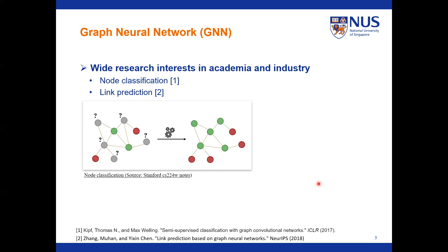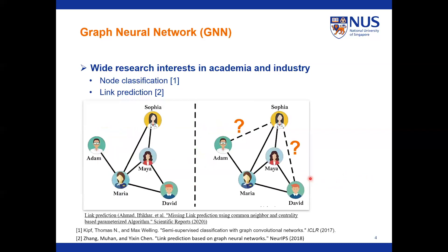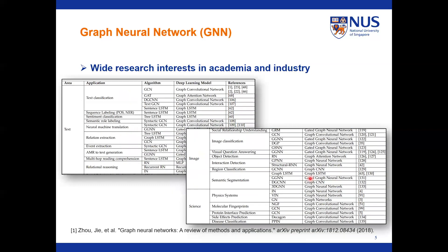GNNs generalize deep representation learning to graph data and have achieved state-of-the-art performance across a number of graph-based tasks, such as node classification, link prediction, graph classification, and recommendation systems. For example, a node classification task takes place in a semi-supervised setting where the labels of some nodes are known but some are unknown. GNN performs recursive neighborhood aggregation operations, where the model learns features by inspecting neighbor nodes. This enables applications like shop searching in e-commerce, traffic prediction, etc. Interested audiences may find more about node classification and link prediction in the references and the survey listed here.